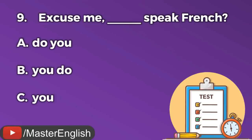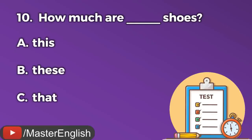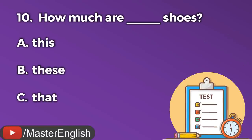Question number nine. Excuse me. ___ speak French? A: Do you. The correct answer is A: Do you. Excuse me, do you speak French? Question number ten. How much are ___ shoes? A: This. B: These. C: That. The correct answer is B: These. How much are these shoes?